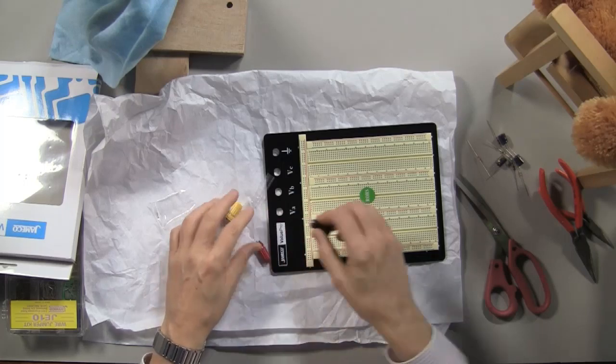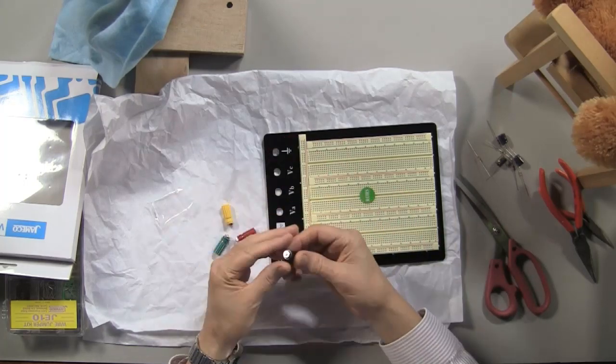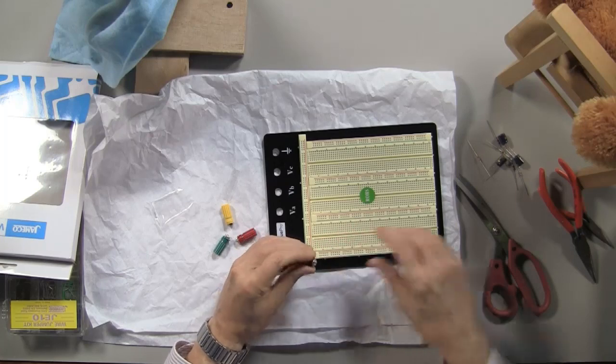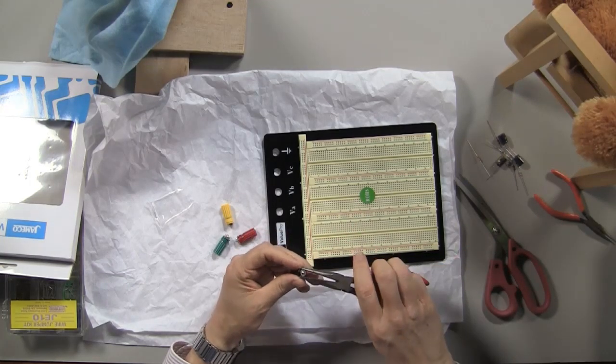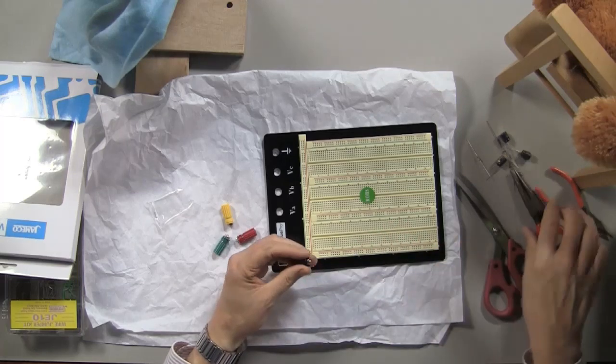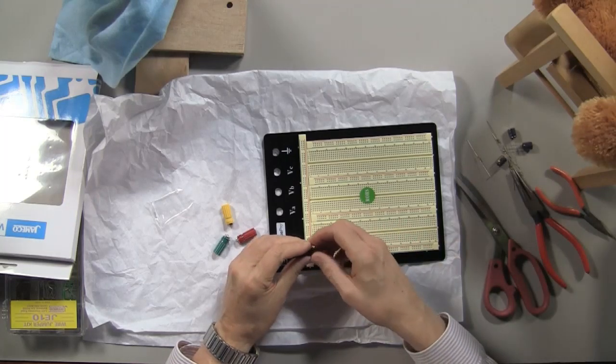We need to attach these to these holes on the breadboard. So I need to use an appropriate tool, such as pliers. I grab this, open this, and rotate it. It comes out like so.